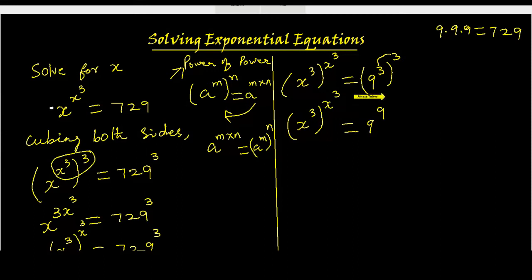So we are getting in the form x cubed to the power x cubed equals 9 to the power 9, which clearly says that this base x cubed is equal to the other base on the right side, 9. So x cubed equals 9. Now I want only the value of x, not x cubed. I can cube root both sides, so x will be cube root of 9.